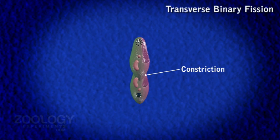Two new contractile vacuoles are formed later on. Two new buccal structures also appear.